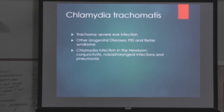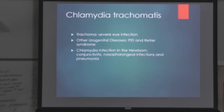Let's talk about trachoma first. This is going to be a serious eye infection — it's actually the number one cause of blindness in the world. It's seen in climates with high temperatures and high humidity, and it's the most commonly transmitted bacterial pathogen, which is pretty interesting.